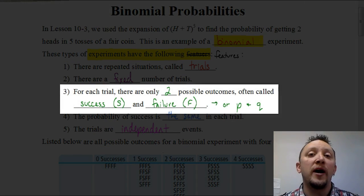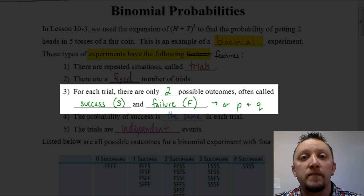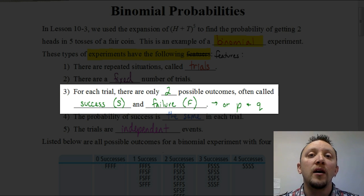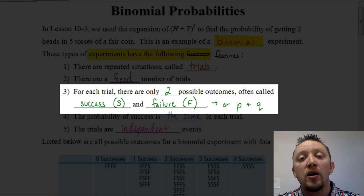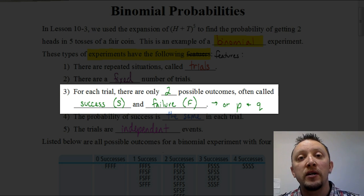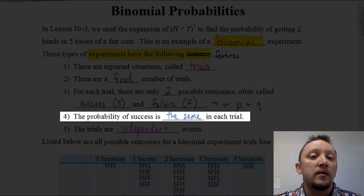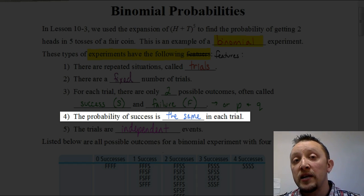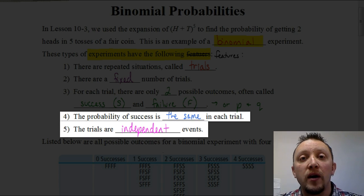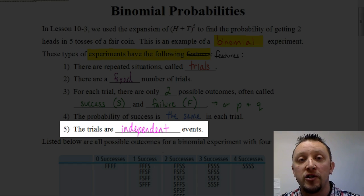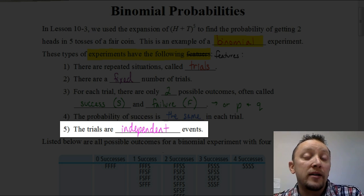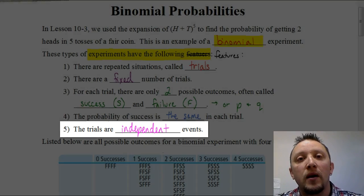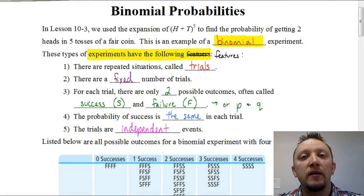For each trial, there's always going to be two possible outcomes — you can either have a failure or a success. They refer to a failure as F and a success as S. For the formula we're going to look at, we use P to represent the probability of a success and Q as the probability of a failure. The next property is that the probability of success is going to be the same in each trial — it won't change from one trial to the next. Also, each trial is going to be independent of each other, so what happens on the first trial has no impact on the next trial. Those are the five properties of a binomial experiment.